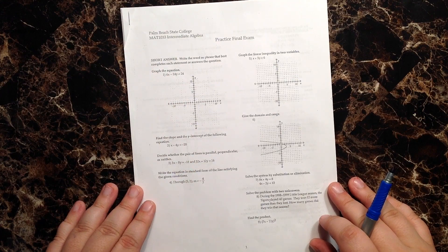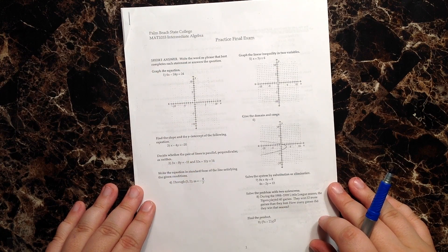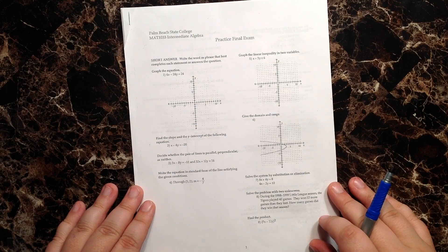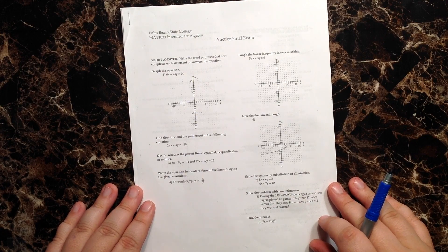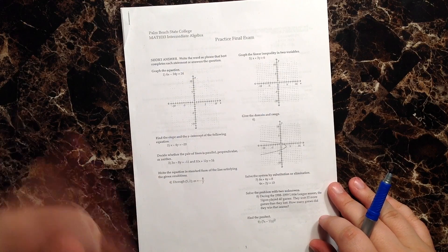Well, good morning, good afternoon, good evening. Joe Brownlee here, and you're tuning in for question number four of the final exam review for intermediate algebra at Palm Beach State College. So let's get to it.